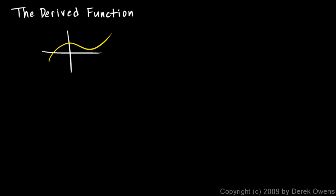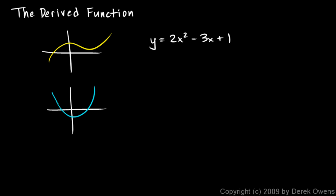Now we'll talk about the derived function, more commonly referred to as the derivative. The term derivative typically refers to a function, not just a slope at a point. So far we've taken a graph and, based on the slope at various points, graphed another function that we thought would be the derivative. We've also taken functions like a cubic: y equals 2x cubed minus 3x plus 1, and used a difference quotient to find the slope at a point.